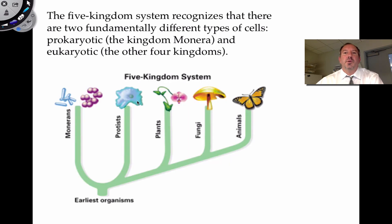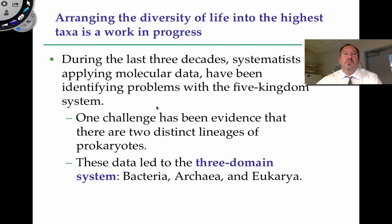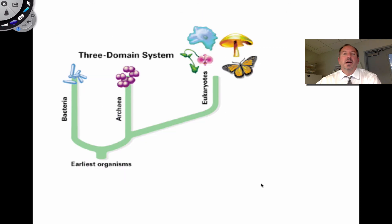The five-kingdom system recognizes the fundamental difference between Monera — prokaryotes — and the eukaryotes: protists, plants, fungi, and animals. However, arranging the diversity of life is always a work in progress. When we apply the most recent molecular data, we see challenges with the previous classification scheme. This led to the three-domain system — Bacteria, Archaea, and Eukarya — which suggests that eukaryotes are more closely related to Archaea than to Bacteria.